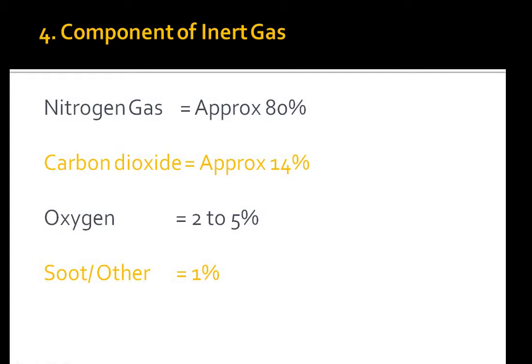The composition of inert gas is approximately: nitrogen 80%, carbon dioxide 14%, oxygen 2 to 5%, and soot and other gases 1%.